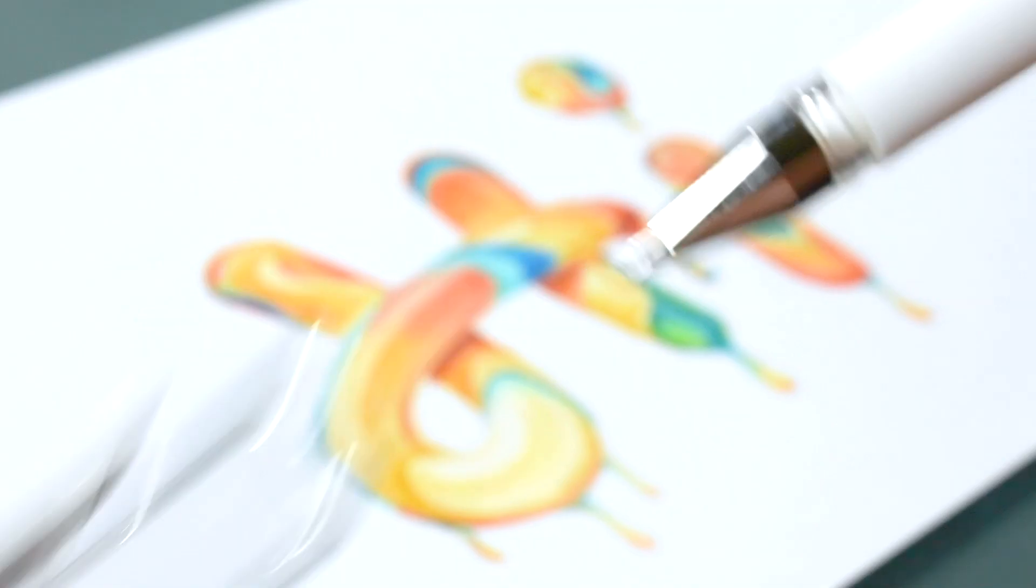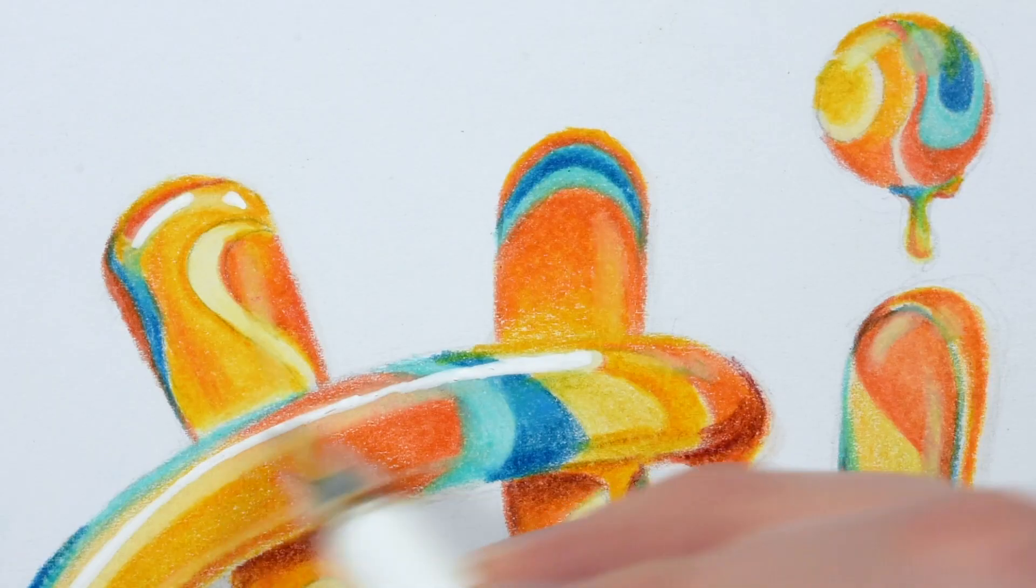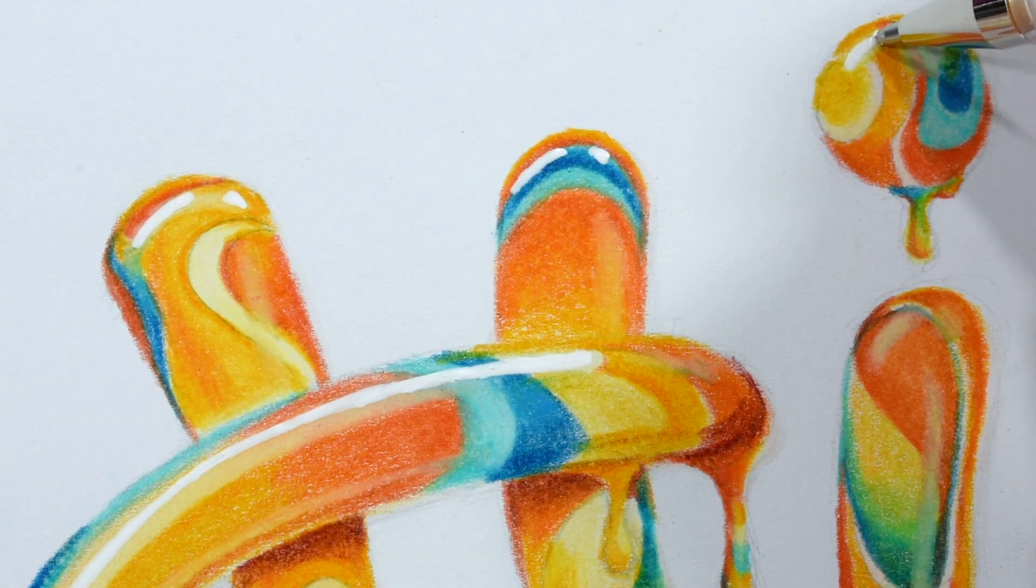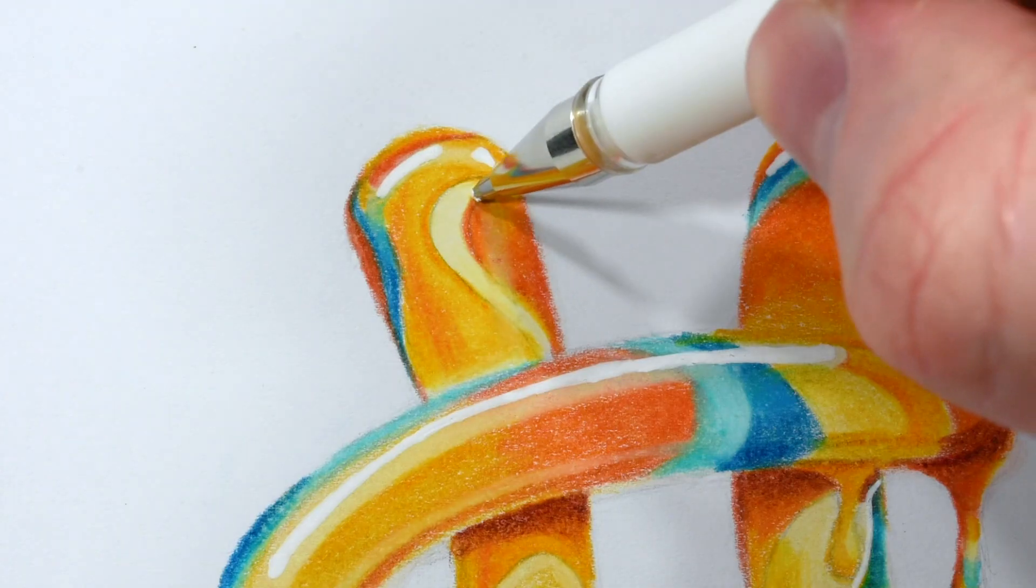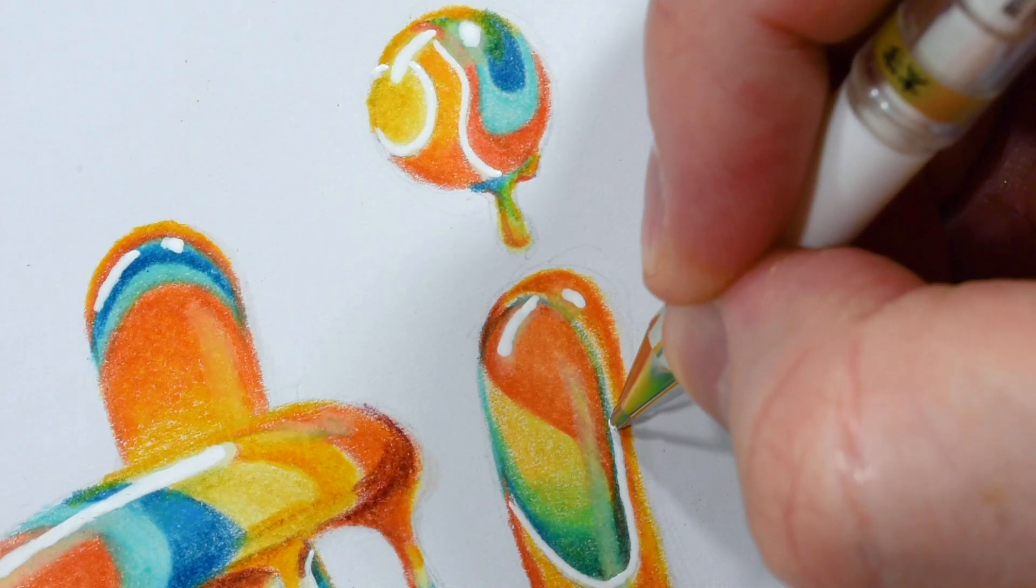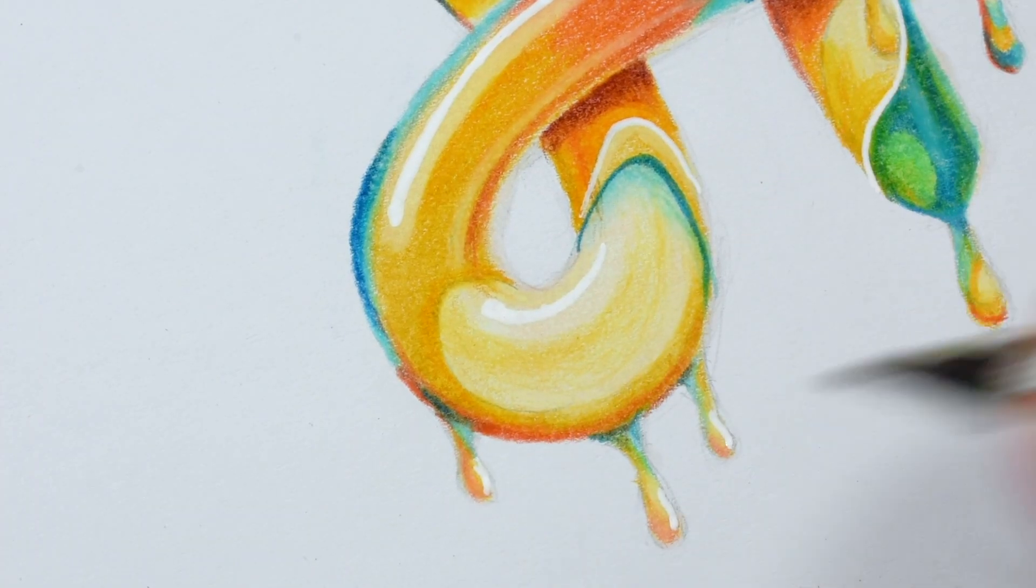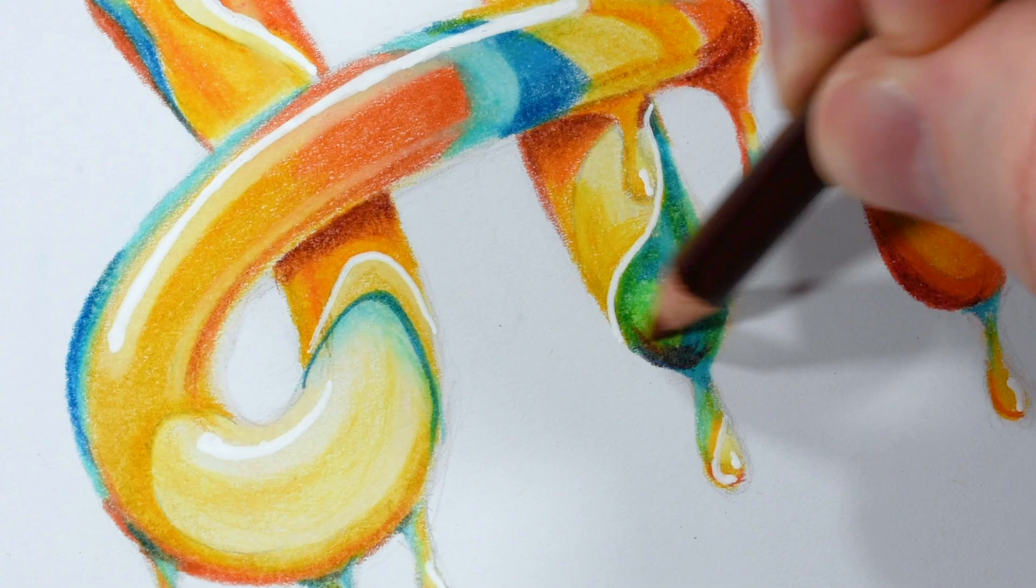you know this white gel pen is one of my favorite finishing tools. I'm using this to brighten up the shines and add some white paint to the mix. Finally a little more shading and I'll call this done.